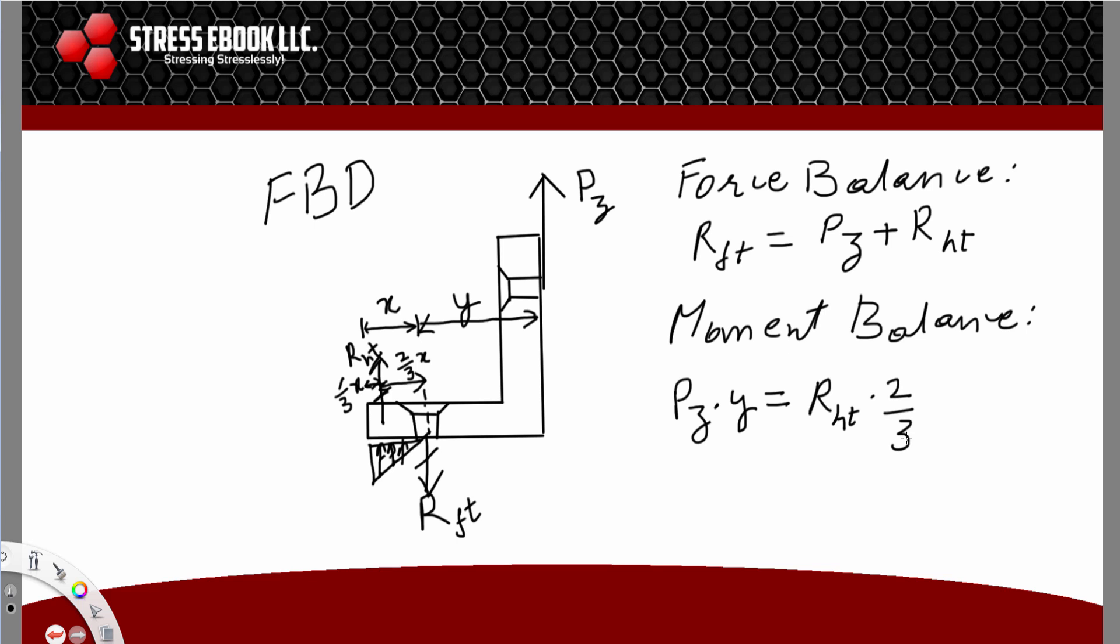Therefore, we have RHT equals PZ times 3 divided by 2 times X. There's a Y here as well, so we have RHT equals PZ times 3Y divided by 2X. That's what your RHT is.